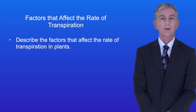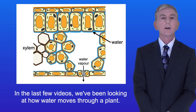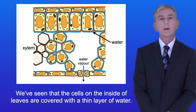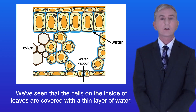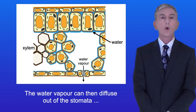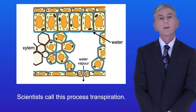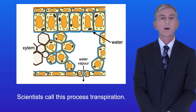Hi and welcome back to Free Science Lessons. By the end of this video you should be able to describe the factors that affect the rate of transpiration in plants. In the last few videos we've been looking at how water moves through a plant. We've seen that the cells on the inside of leaves are covered with a thin layer of water. This water can evaporate and the water vapor can then diffuse out of the stomata down the concentration gradient to the external air. Scientists call this process transpiration.